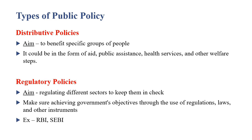The very first type of public policy is distributive policy. You can relate it with distribution. These are policies that are made to benefit specific groups of people. इनका aim होता है कि कुछ चुनिंदा लोगों को, especially जो disadvantaged sections of society होते हैं, उनको policies का benefit मिल सके। ये aid, health services, या public assistance की form में हो सकती हैं। Food distribution भी इसका example है — जैसे कि गरीबी रेखा से नीचे रहने वाले लोगों को 5 kg free ration मिलेगा।